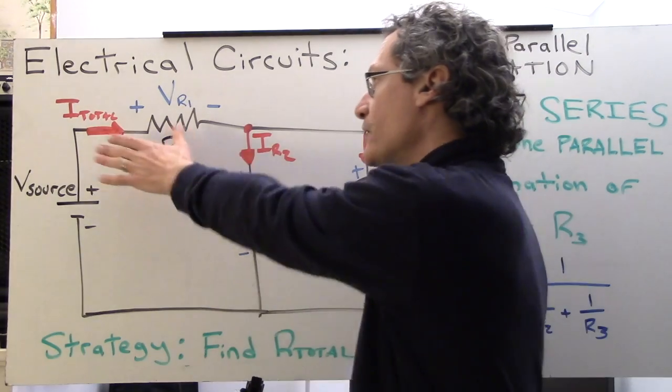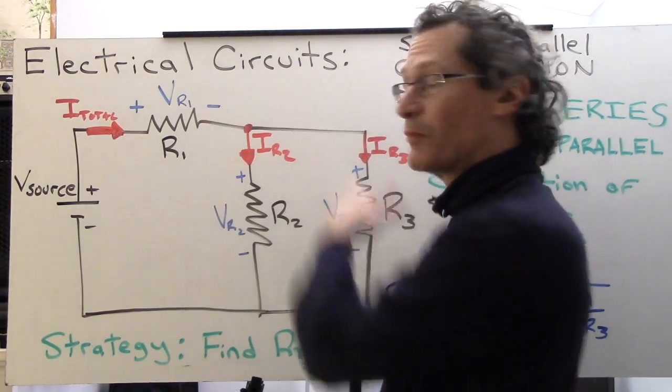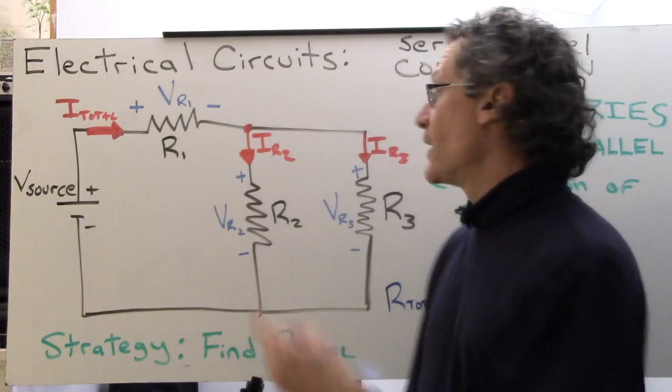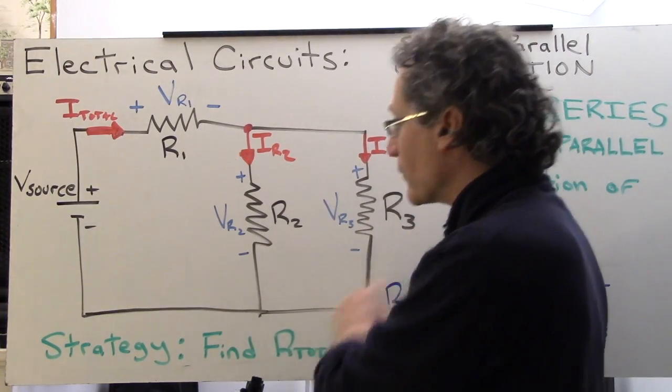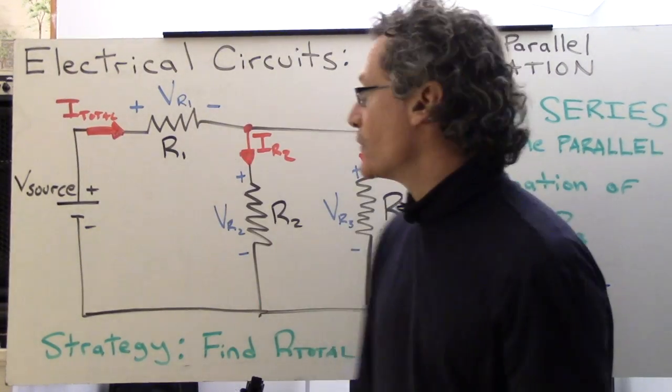What we also have is that I total flows through R1, splits off into two branches, IR2 and IR3, and it would recombine over here and then keep flowing around like this.